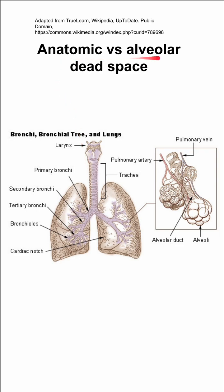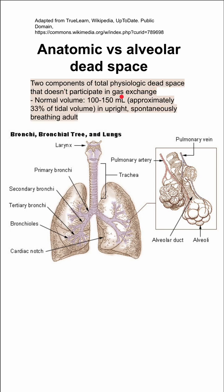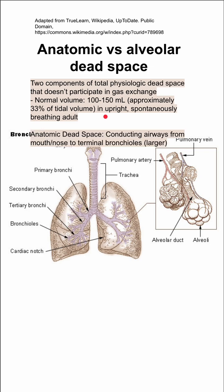This is the difference between anatomic and alveolar dead space. Both of these two components make up your total physiologic dead space that does not participate in gas exchange. The total physiologic dead space has a volume of about 100 to 150 cc's, which is approximately one third of your total tidal volume in an upright spontaneously breathing adult.